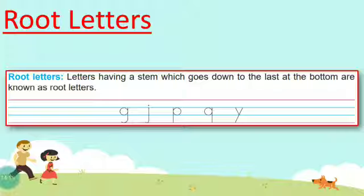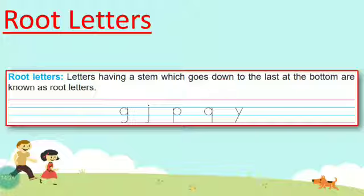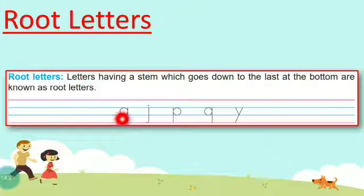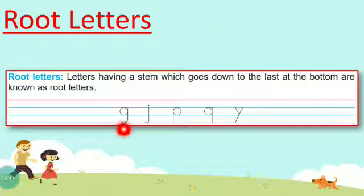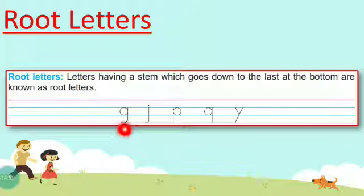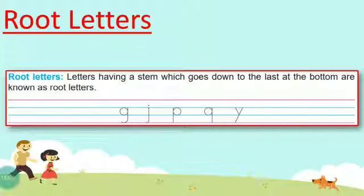Now we have another set of letters — Root Letters. Root Letters have a stem which goes down. In Sky Letters the stem goes up touching the red line above, while in Root Letters the stem goes down touching the red line below. Letters like G, J, P, Q, and Y are Root Letters.